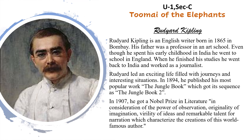This book talks about a boy Mowgli who was born and brought up in the jungle amongst wild animals, and how he comes across various problems in his life, especially led by the antagonist, the tiger, and how he overcomes all the situations. In 1907 he got a Nobel Prize in Literature, given because of his power of observation, originality of imagination, virility of ideas, and remarkable talent for narration, which characterized the creation of this world-famous author.